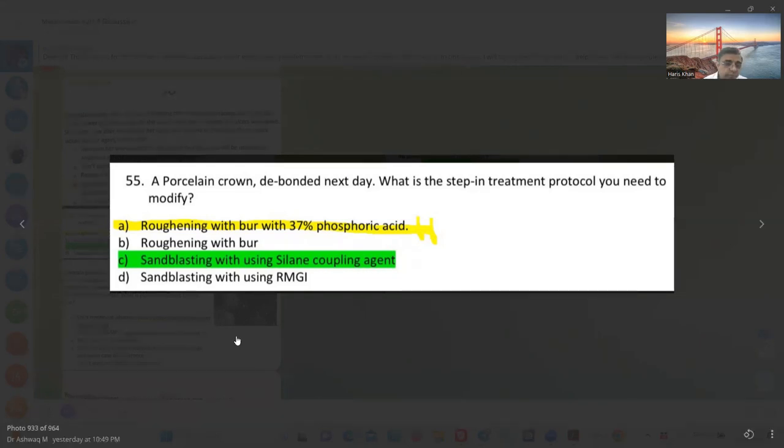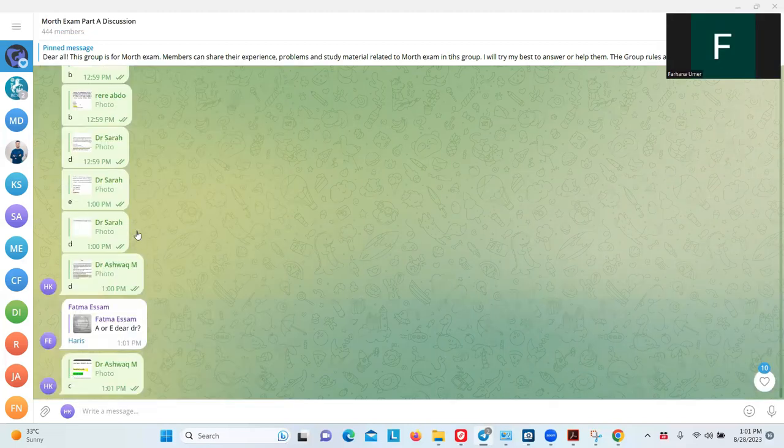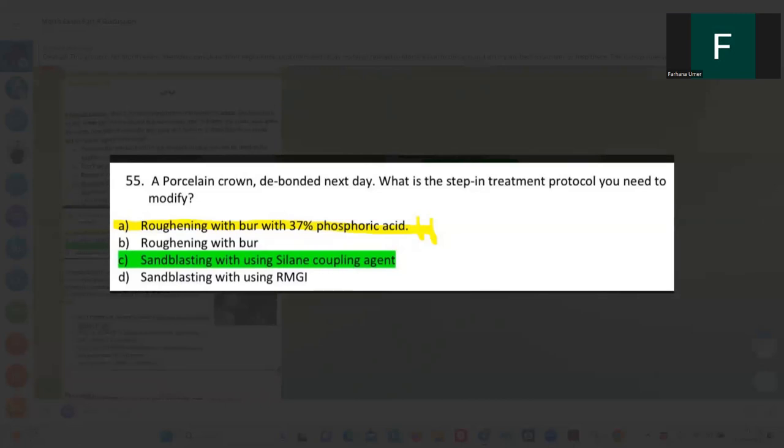What is the next step of the protocol you need to modify? If it's done, then we can do roughening with a bur, sandblasting, using silane coupling, and etching with hydrofluoric acid. I think C. Yes. Sir, we can either go with sandblasting or hydrofluoric acid with the silane coupling agent. Sandblasting and hydrofluoric acid are mechanical—they make it rough on the surface—while silane coupling agent is chemical. So I agree, but I'm talking about the steps: either you can go for sandblasting or you can go for hydrofluoric acid with silane coupling agent. This is my point. They say you can combine all of them if you have the option.